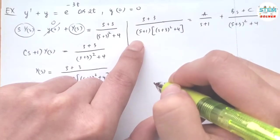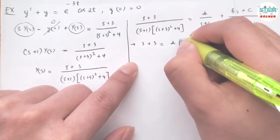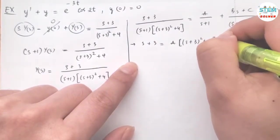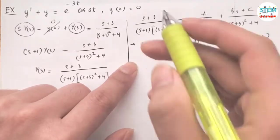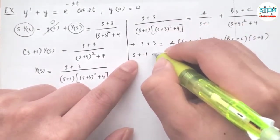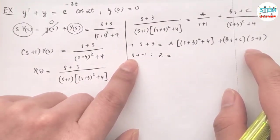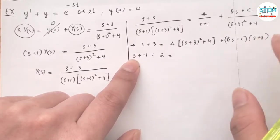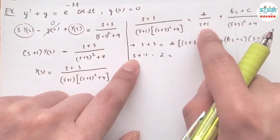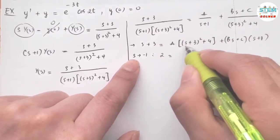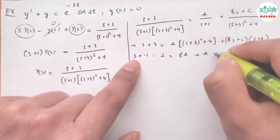Multiplying both sides by the LCD gives s plus 3 equals A times s plus 3 squared plus 4, plus Bs plus C times s plus 1. Taking the limit as s approaches negative 1 eliminates the second term. On the left we get 2, and on the right we get A times 2 squared plus 4, which is 8A. So A equals 1 fourth.